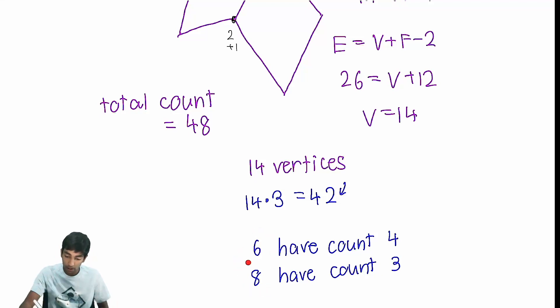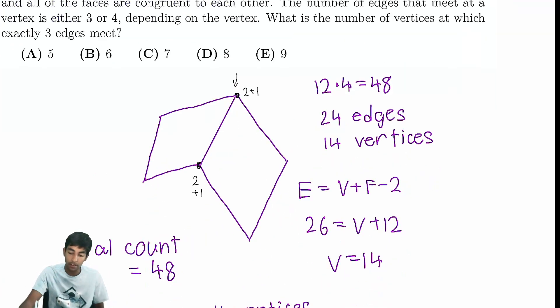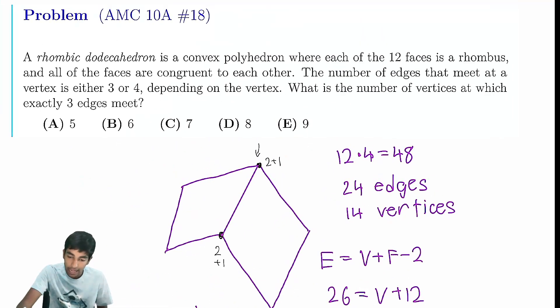And the total number of vertices is also 14. Therefore we see 6 of the vertices have 4 edges going out, and 8 have 3 edges going out. So it's asking, how many vertices do 3 edges meet? That's just 8. And our answer is 8.